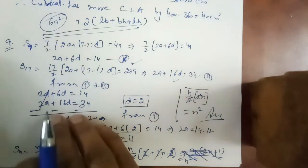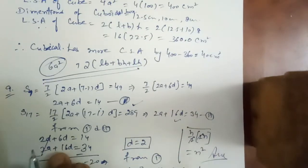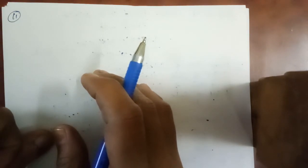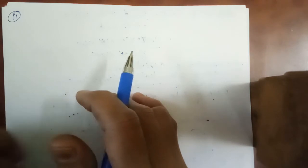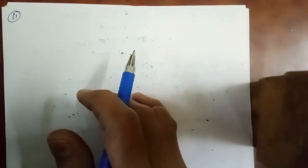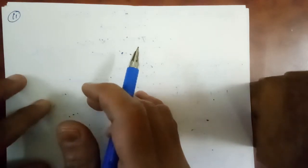Now question number 11th is the doubt of a student also. If the sum of first n terms of an AP is 4n minus n square, what is the first term? What is the sum of first two terms? What is second term? Similarly third and tenth and nth terms also.